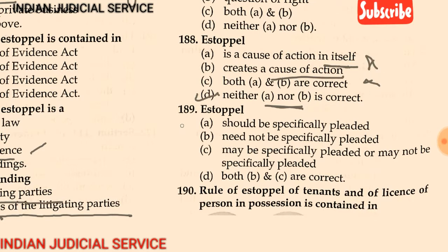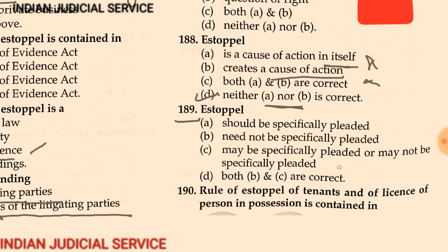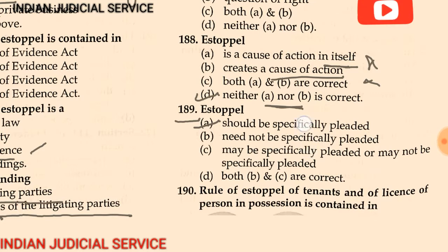Question 189: Estoppel — (A) should be specifically pleaded, (B) need not be specifically pleaded, (C) may or may not be specifically pleaded, (D) both B and C are correct. The answer is option A: estoppel should be specifically pleaded.